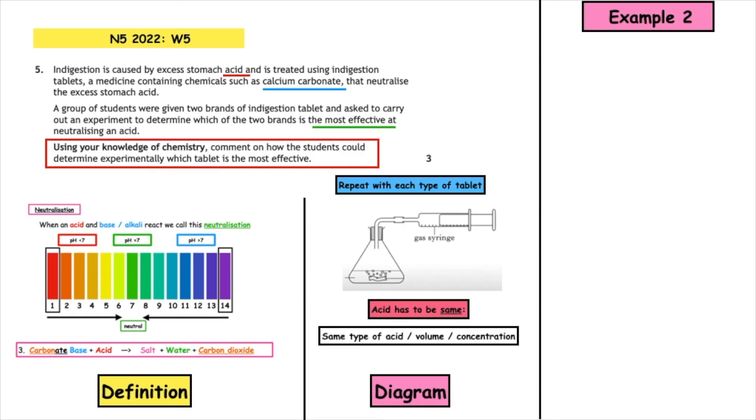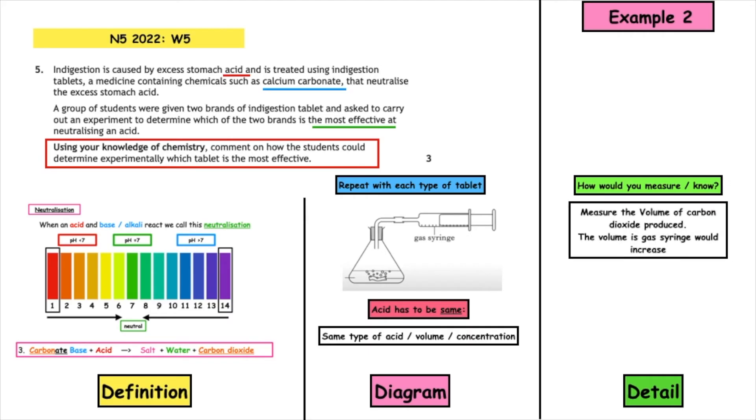And again we could state that the things of the acid that have to remain the same are the same type of acid, volume of acid, and concentration of acid. How would you measure it? No, you'd measure the volume of carbon dioxide produced and this volume would be collected in the gas syringe. And the volume would increase as time goes on. You would use a stopwatch to time it, and the one which the volume increases the fastest will be the most effective.